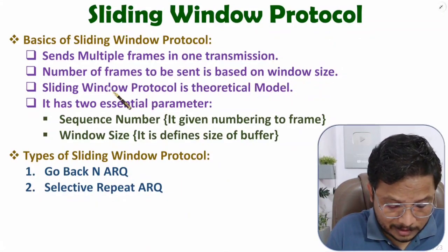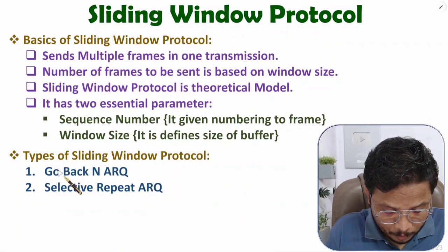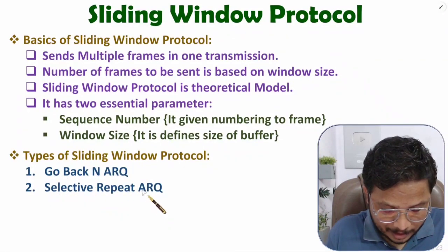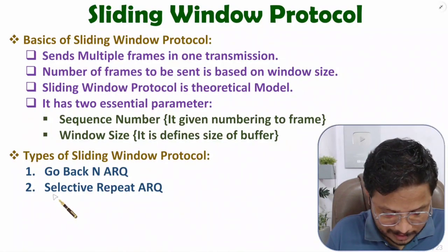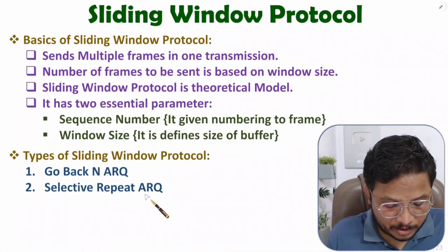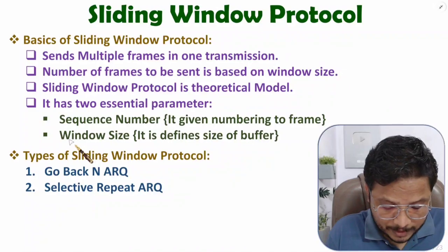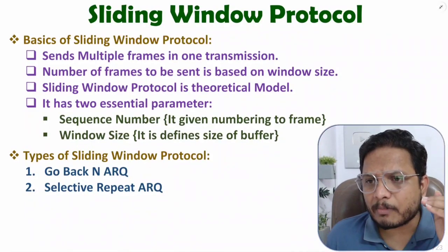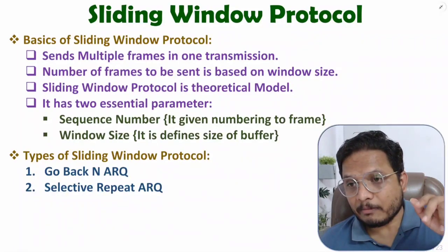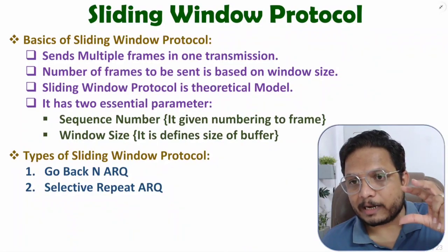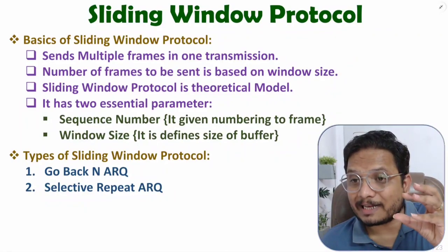Sliding window protocol is a theoretical model, not a practical model. Based on sliding window protocol there are two practical protocols: Go-Back-N ARQ and Selective Repeat ARQ. Selective Repeat ARQ is widely used in computer networks. With sliding window protocol there are two essential parameters: sequence number and window size. The sequence number shows the number of the transmitted frame, and window size depends on the buffer size at the transmitter side.